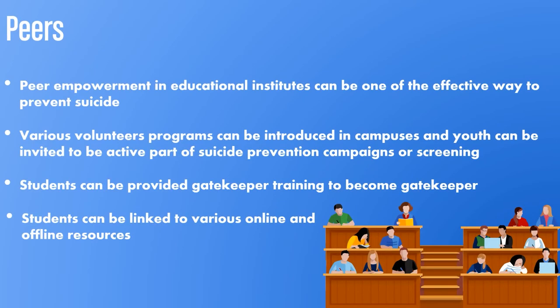Peer empowerment in educational institutes can be one of the effective ways to prevent suicide. Various volunteer programs can be introduced in campuses and youth can be invited to be an active part of suicide prevention campaigns or screening. Students can be provided gatekeeper training to become gatekeepers, and can be linked to various online and offline resources.